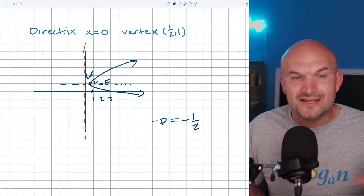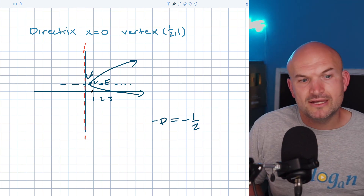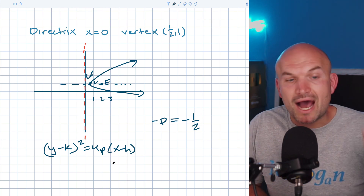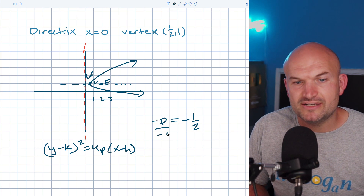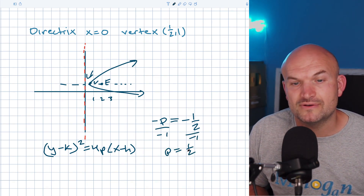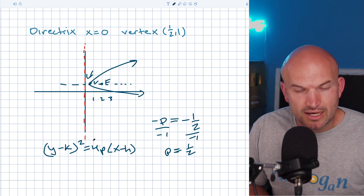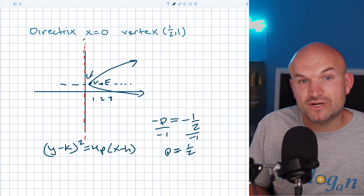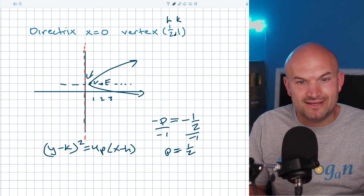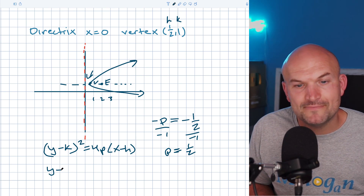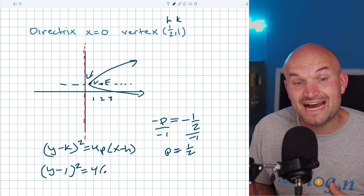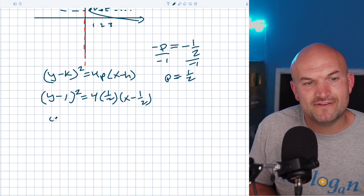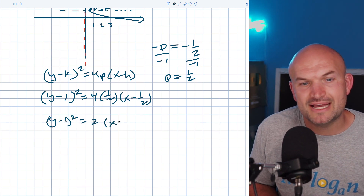We can recognize that this is a horizontal parabola — it's opening up to the right. So the equation is going to be (y − k)² = 4P(x − h). The Y is squared because it's a horizontal parabola. Now let's divide by negative one: P equals positive one half. Our vertex is (h, k), which is (1/2, 1), and P equals positive one half. Plugging in: (y − 1)² = 4 × (1/2) × (x − 1/2), which simplifies to (y − 1)² = 2(x − 1/2).